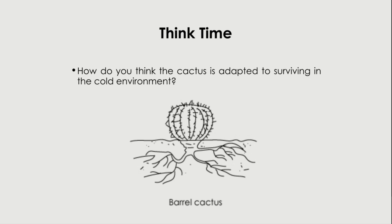Now imagine if these roots were short and a lot of water was transported to the cactus — in an extremely cold environment, the leaves would actually get frozen because there's a lot of moisture and water. The fact that this cactus has really long roots means not much water goes up, keeping the cactus dry to prevent it from getting frozen.